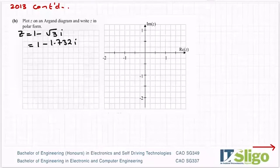So 1 minus 1.7, that's 1.5, so about halfway down there. So that is the complex number there, z. So that's it plotted on an Argand diagram. So real on the x-axis, imaginary on the y. So in polar form. So you can see it's in the fourth quadrant.